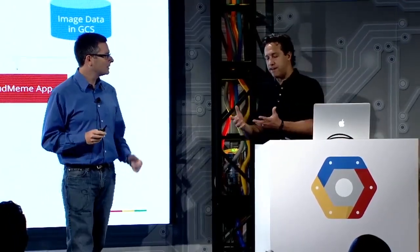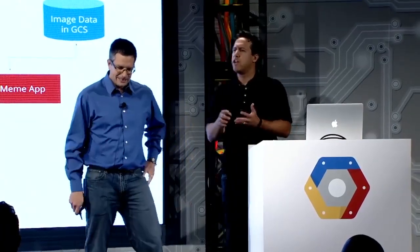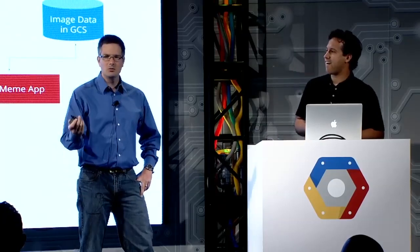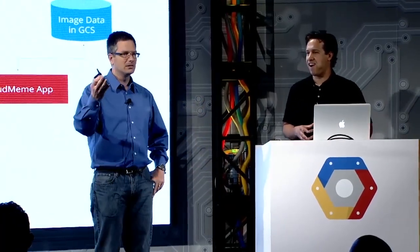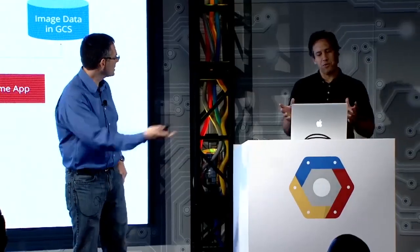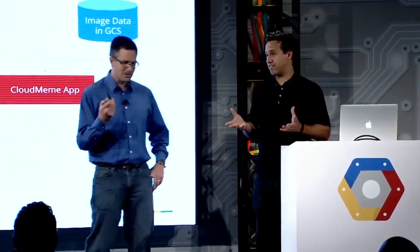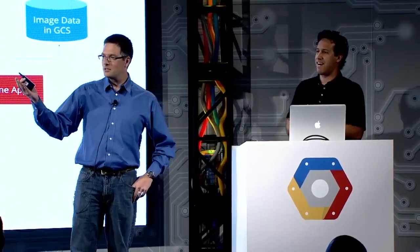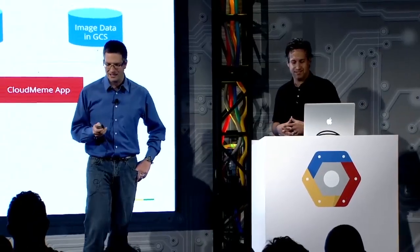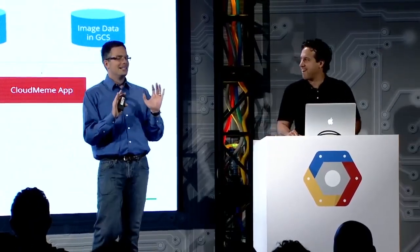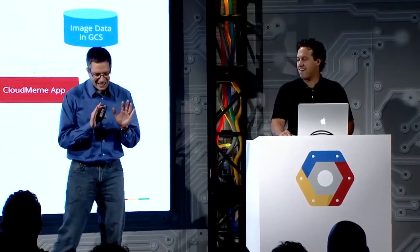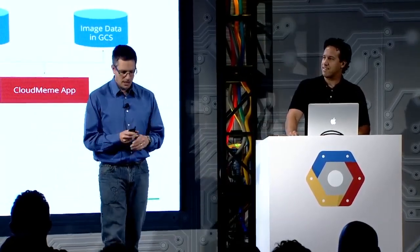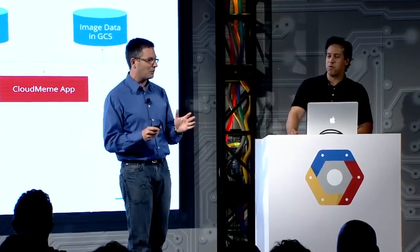We've got to store the metadata somewhere — user info, voting, things associated with the meme. What data stores do you use? I think we should go open source. I've been using Mongo lately, and I think it's a good option. We could get some metadata stored in MongoDB running on a GCE instance, but now we really just got to get started on this if we're going to finish.